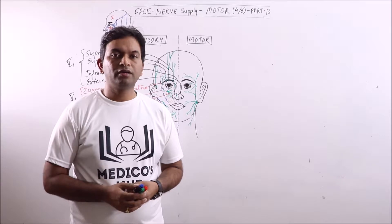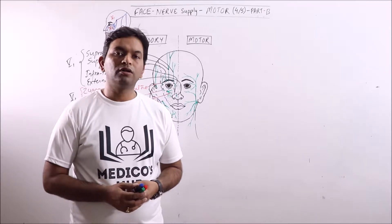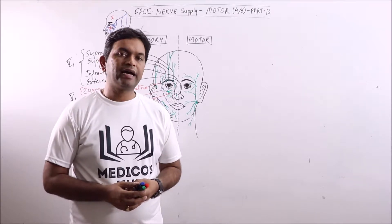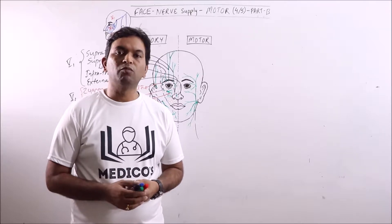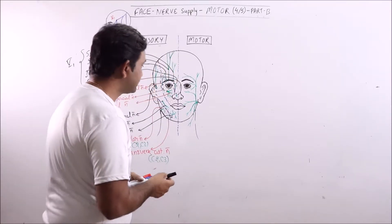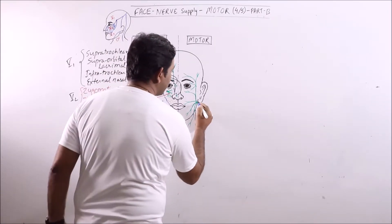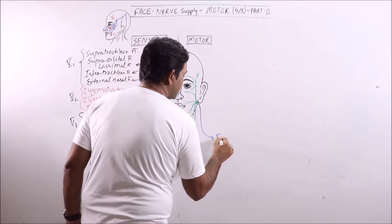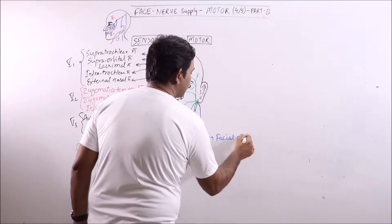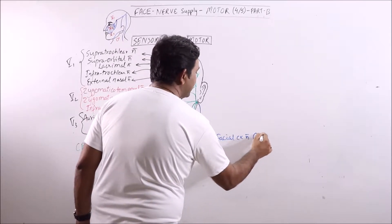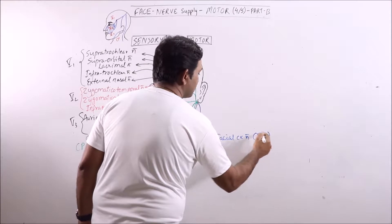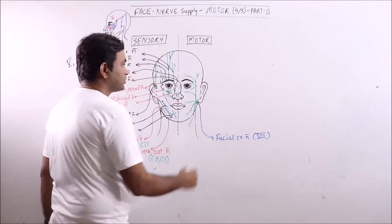Now this is part B of lecture 4 on face, and in this lecture I am going to discuss the motor nerve supply. Motor nerve supply of face is mainly contributed by the facial cranial nerve, which is the 7th cranial nerve. This facial cranial nerve gives 5 major branches to supply the face.